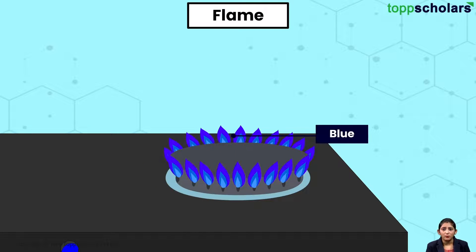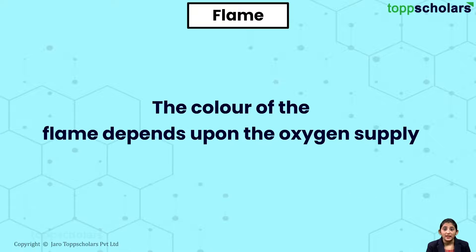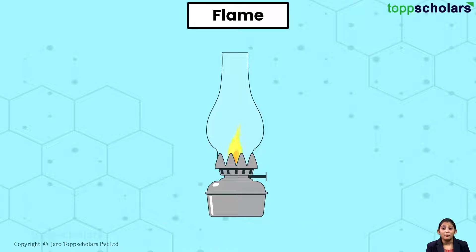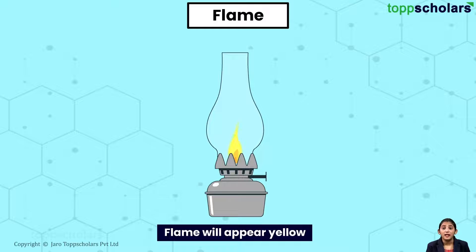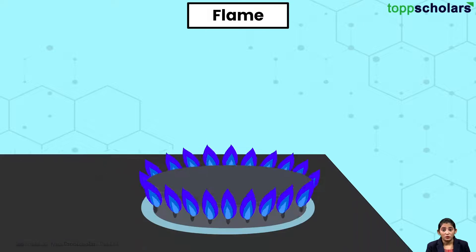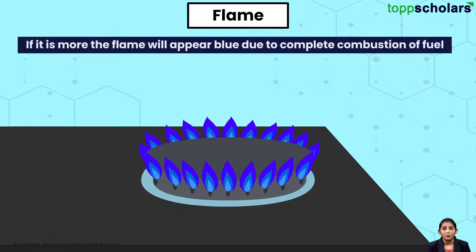It is blue. This is because the flame colour depends upon the oxygen supply. When the oxygen supply is less, the flame appears to be yellow due to incomplete combustion of fuel. Now, when the oxygen supply is more, the flame appears blue due to complete combustion of fuel.